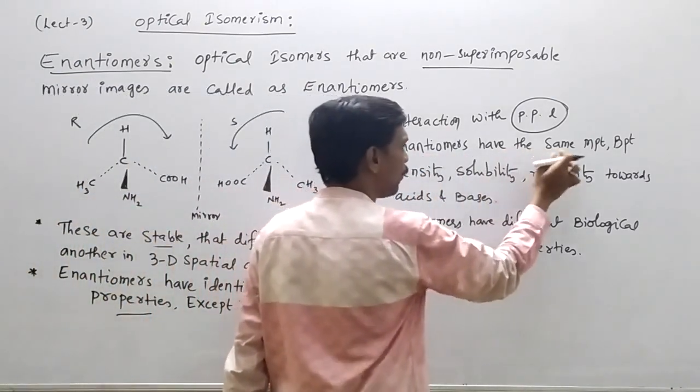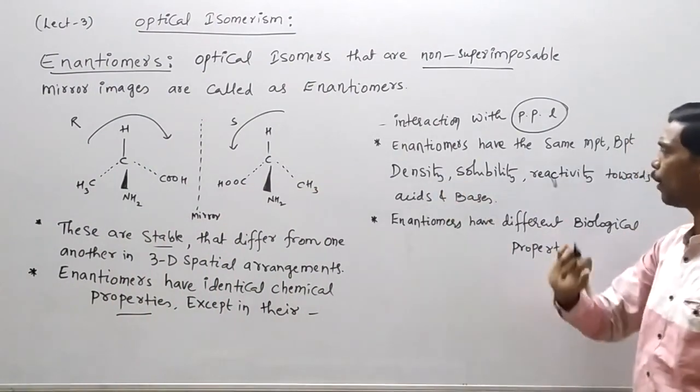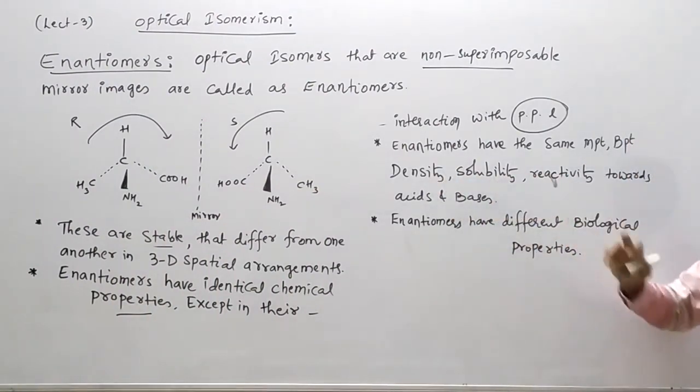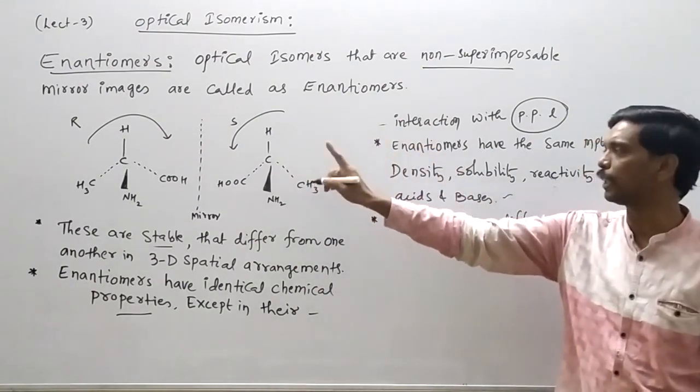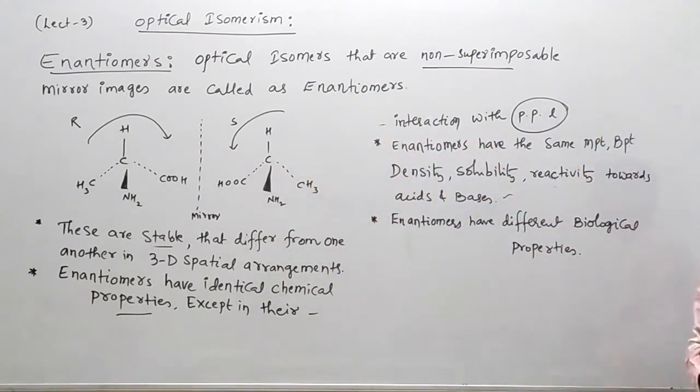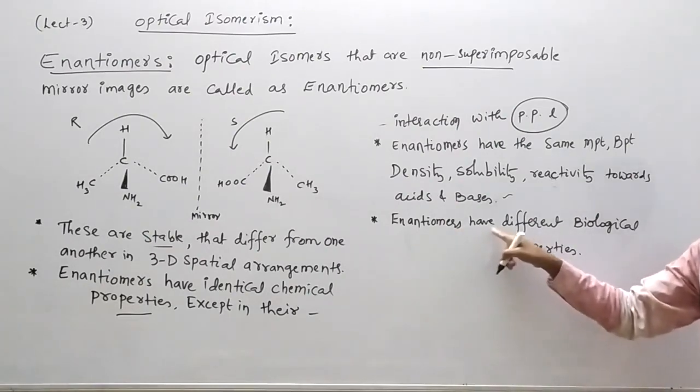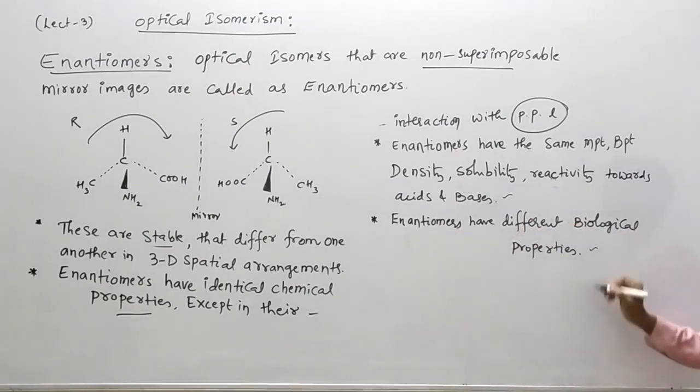Enantiomers have the same melting point, boiling point, density, solubility, reactivity towards the acids and bases. Left compound like this, right compound like this. Enantiomers have different biological properties.